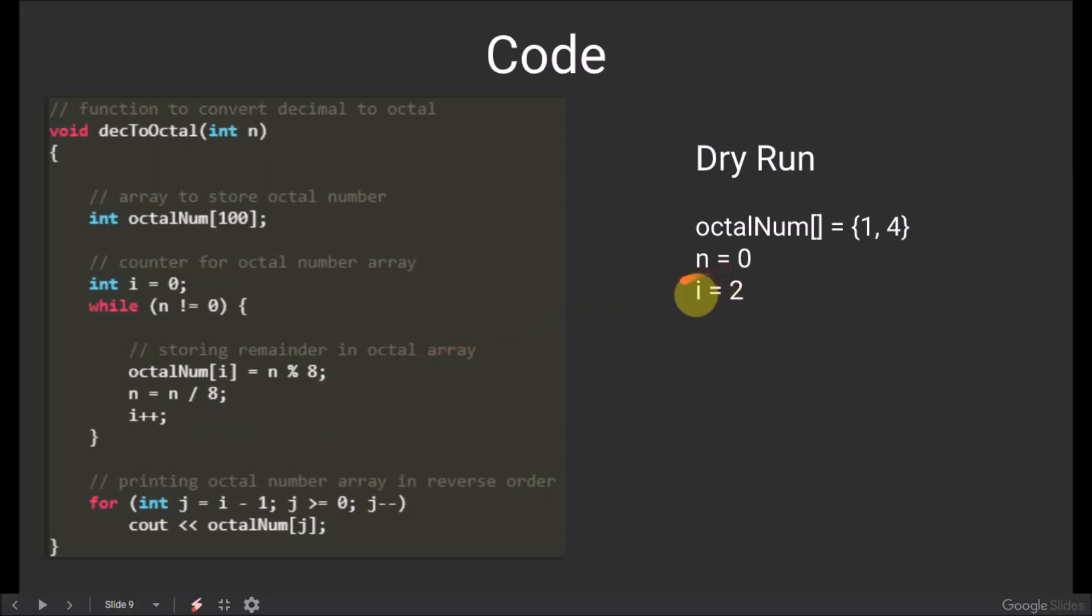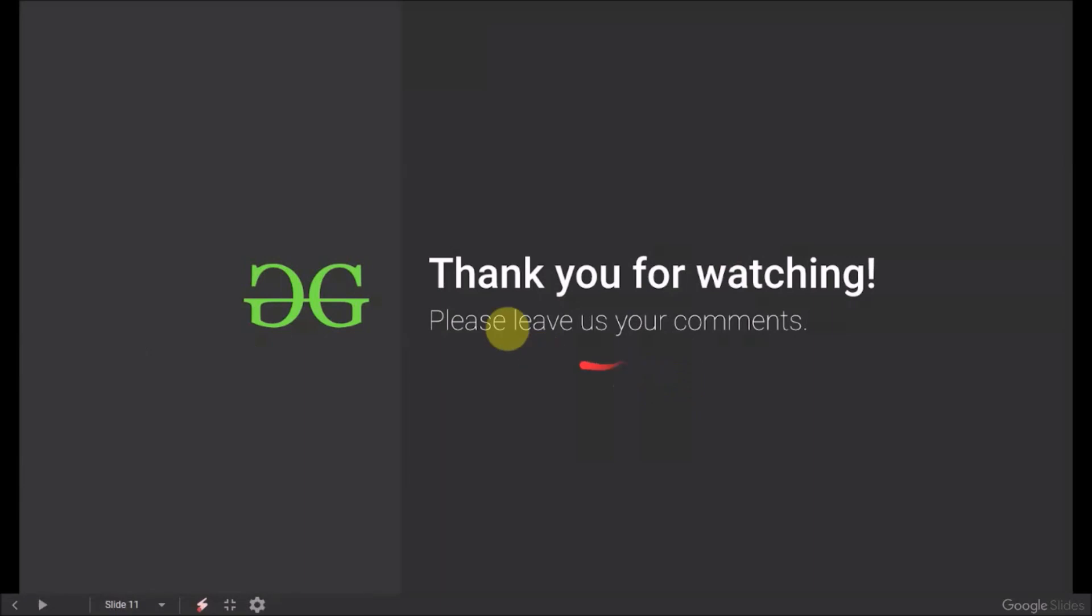Now, as the value of n is equal to 0, we exit the while loop and print the octalNum array in reverse order. That is, 41. I hope you understood the code. Thank you for watching. Please leave us your comments.